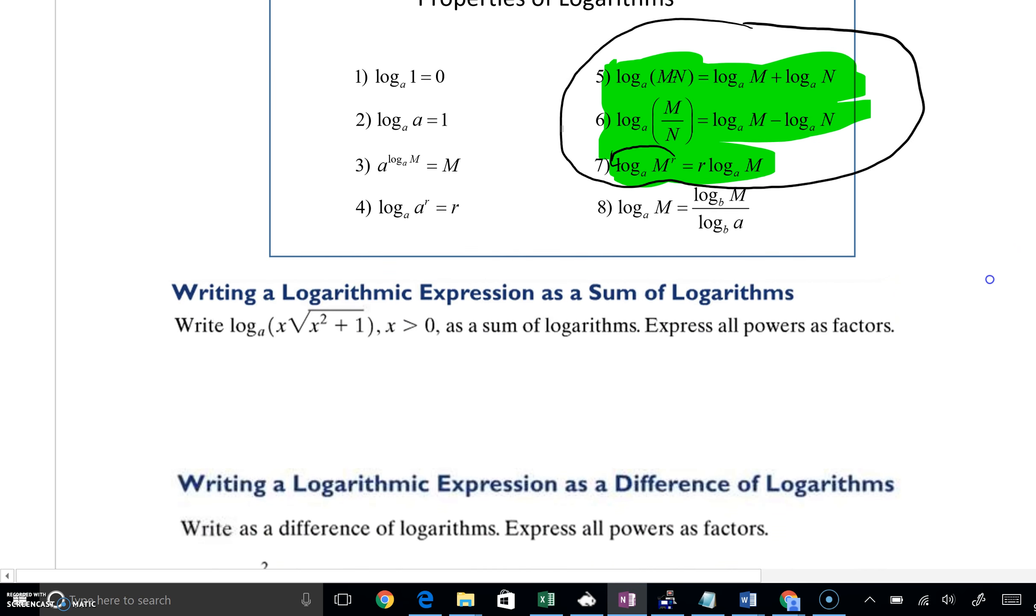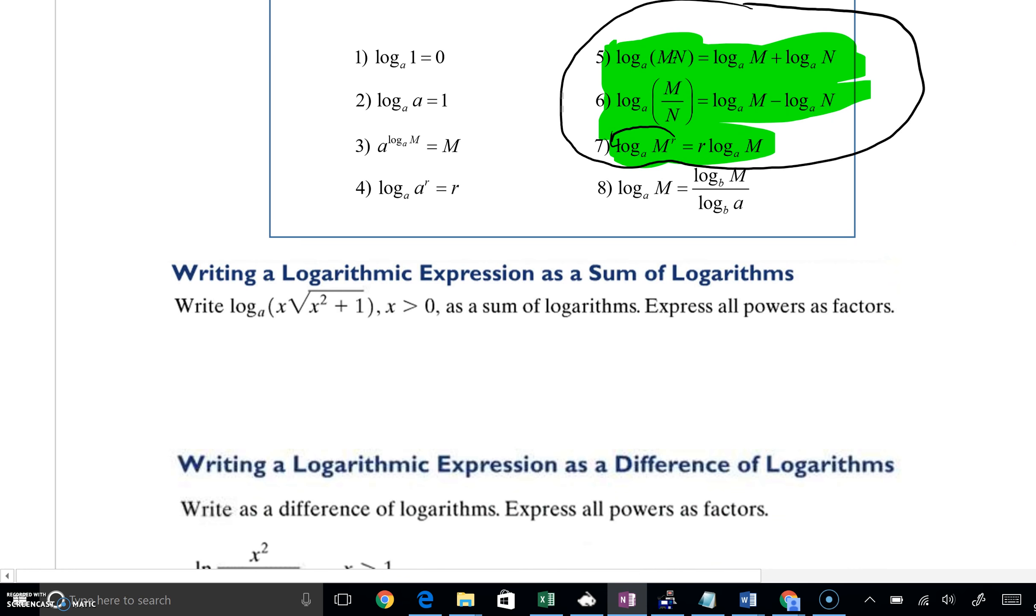On this video, we want to be good with our time here. The directions are to write a logarithmic expression as a sum of logarithms. Take this one log and turn it into addition. Now of course, this is going to really be property number 5. Because we can see that we are multiplying two things. So our M is more or less like this X, and our N is this radical.